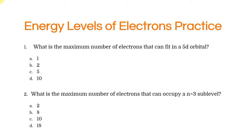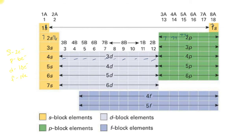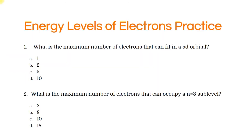Let's practice. What is the maximum number of electrons that can fit in a 5d orbital? A 5d orbital is right here. We just counted the d in the 3d, and it's going to have the same number of boxes because the groups line up, so we go with the fact that there are 10 electrons that fit into a 5d orbital.